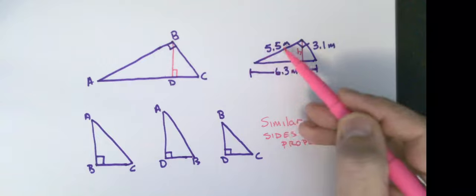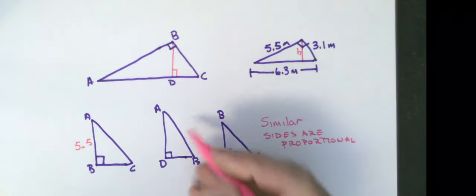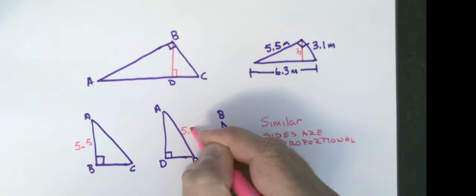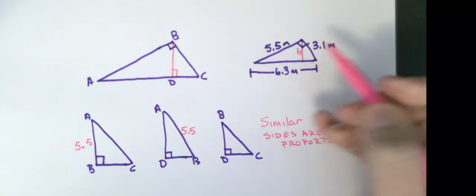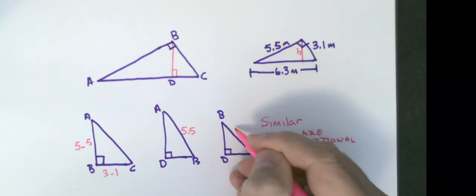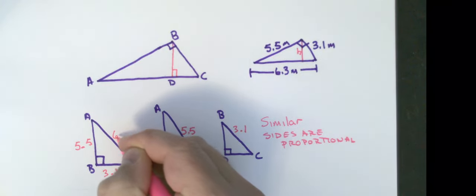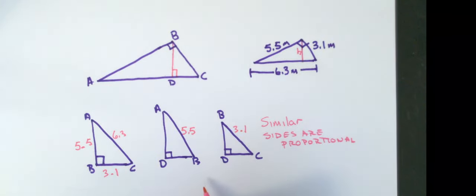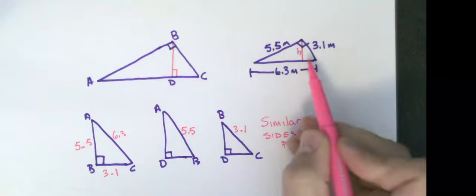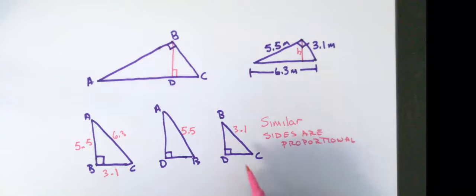Well, AB is 5.5. Do I have another AB? Yep, I have an AB, 5.5. BC is 3.1. BC is 3.1. AC is 6.3. That's the only AC I have. I want to know what the height is. Well, the height, in my case, is BD.